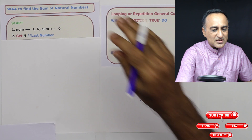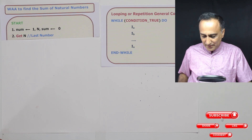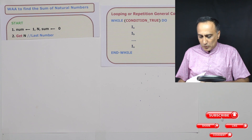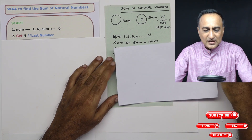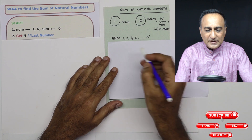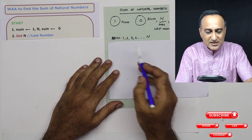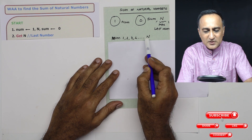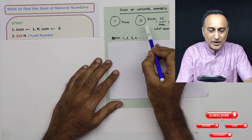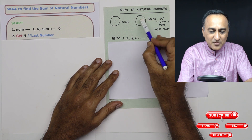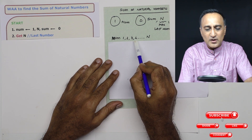In this example, I'm trying to find the sum of natural numbers from 1 to n. In the previous problem, all I did was print the numbers 1, 2, 3, 4, 5, 6 till n. But now I want 1 plus 2 plus 3 plus 4 plus 5 till the end value. To store the sum, I need one variable called sum with an initial value of 0. Initializing to 0 is very important.